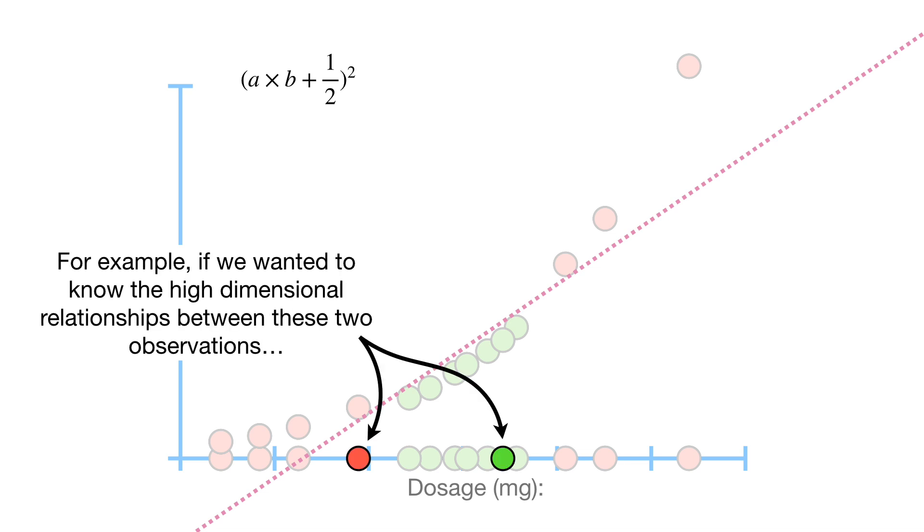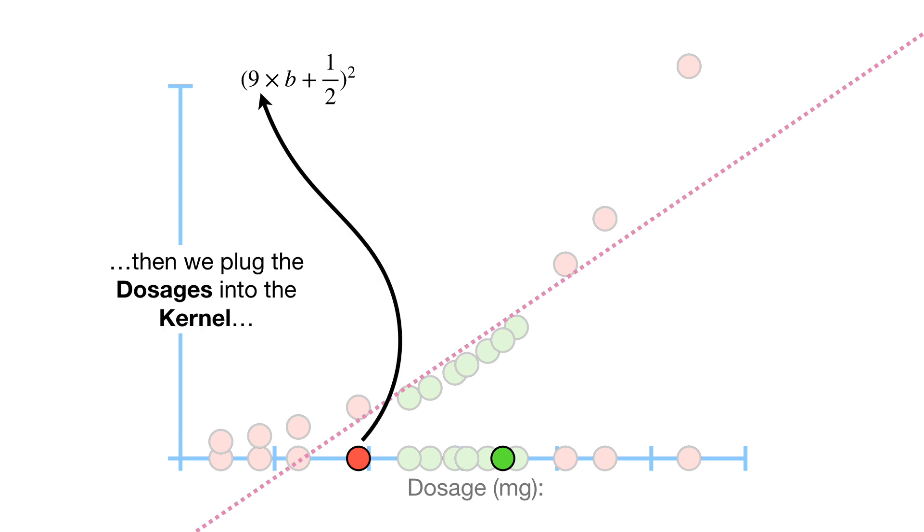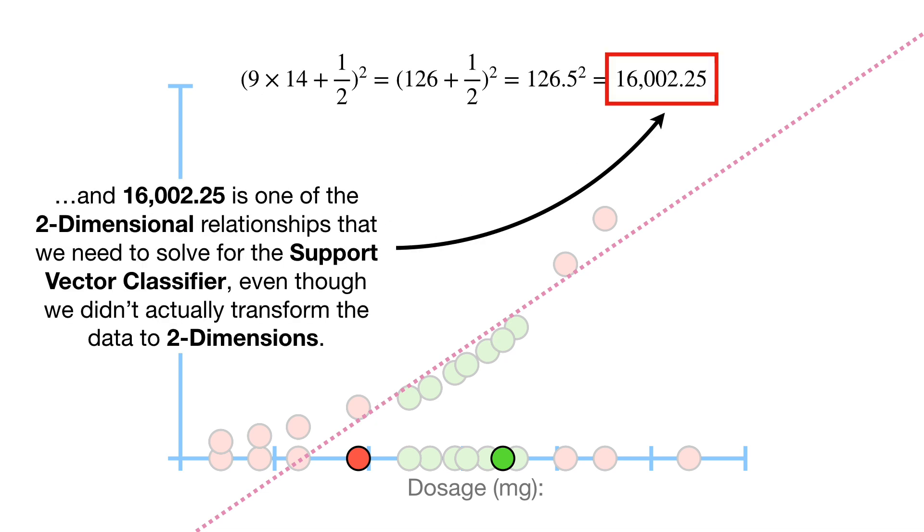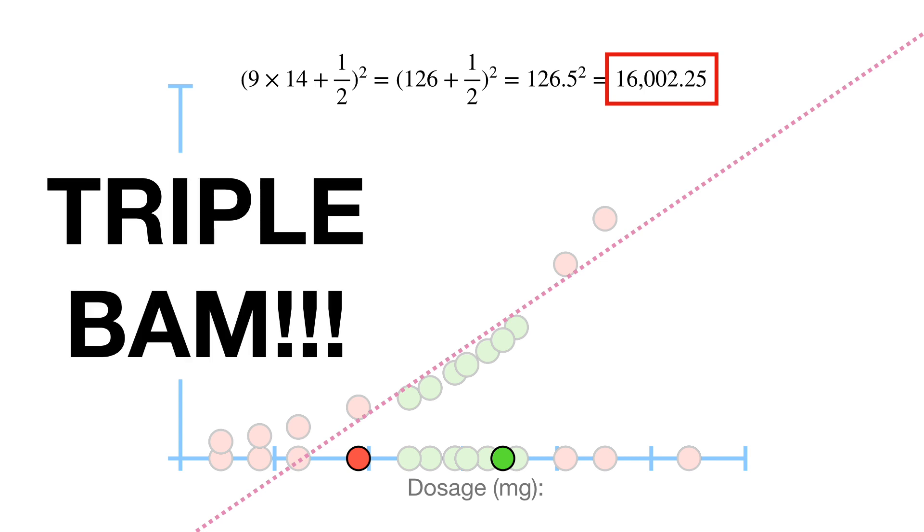For example, if we wanted to know the high-dimensional relationships between these two observations, then we plug the dosages into the kernel, do the math, and 16,002.25 is one of the two-dimensional relationships that we need to solve for the support vector classifier, even though we didn't actually transform the data to two dimensions. TRIPLE BAM!